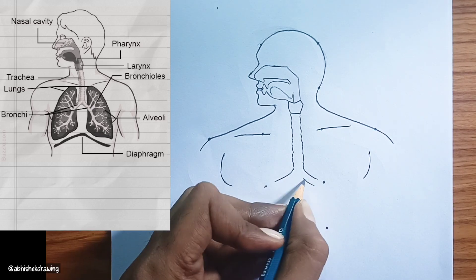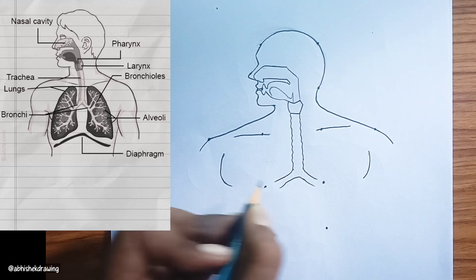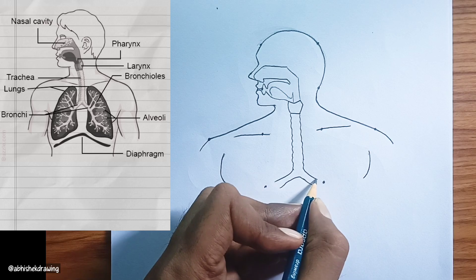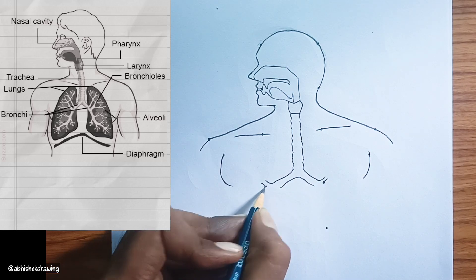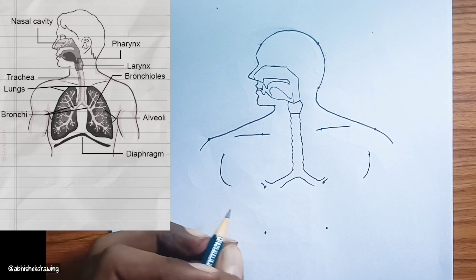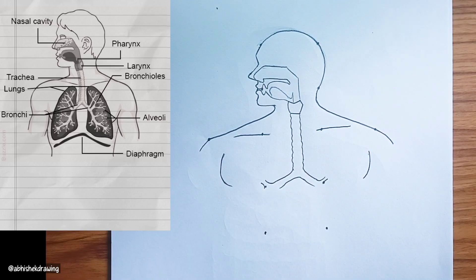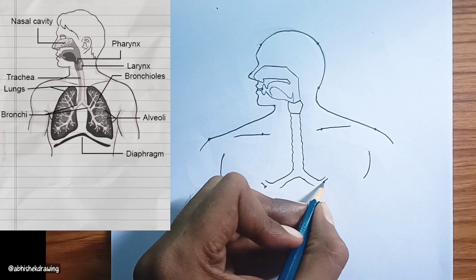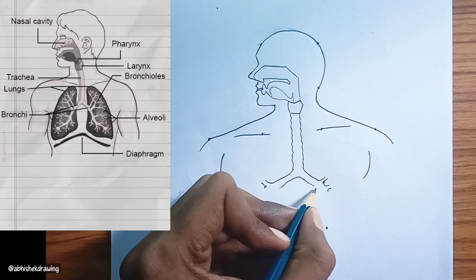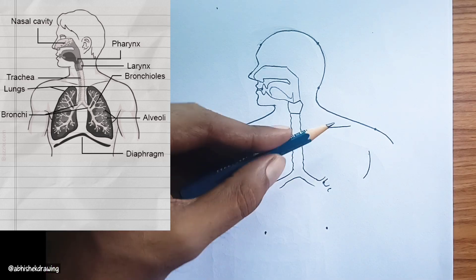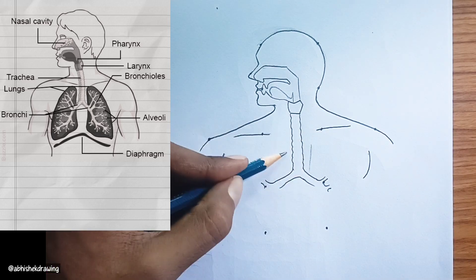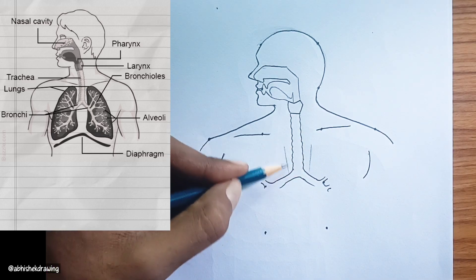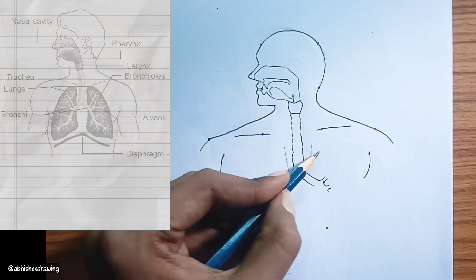In summary, air enters through the nasal cavity, passes through the pharynx, larynx, trachea, bronchi, and bronchioles, eventually reaching the alveoli where gas exchange occurs. The diaphragm assists in the mechanics of breathing.